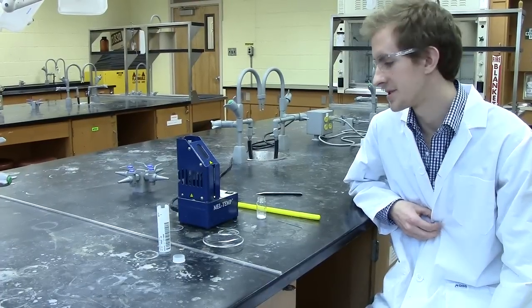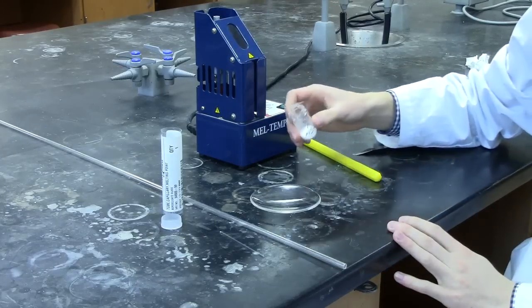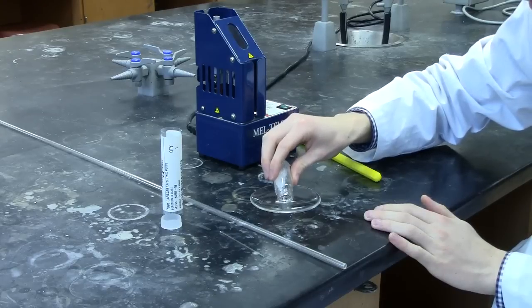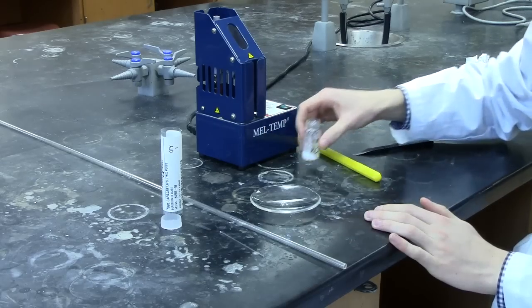In our lab for measuring melt temperatures we use the Mel-Temp. To prepare your sample, you'll be using a watch glass and putting a very small amount of your desired sample onto the watch glass.